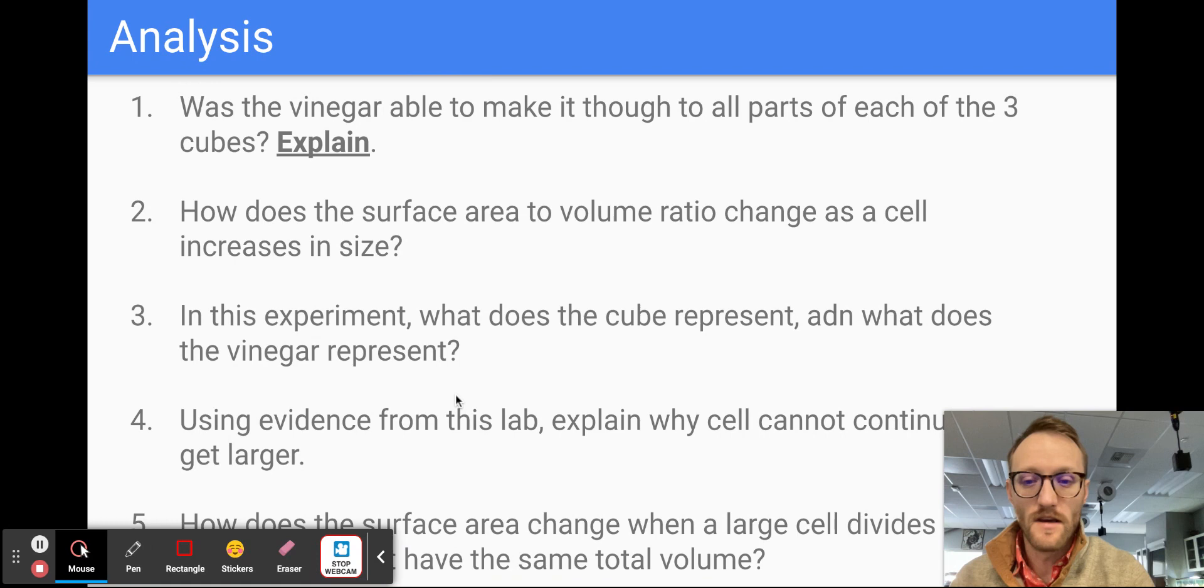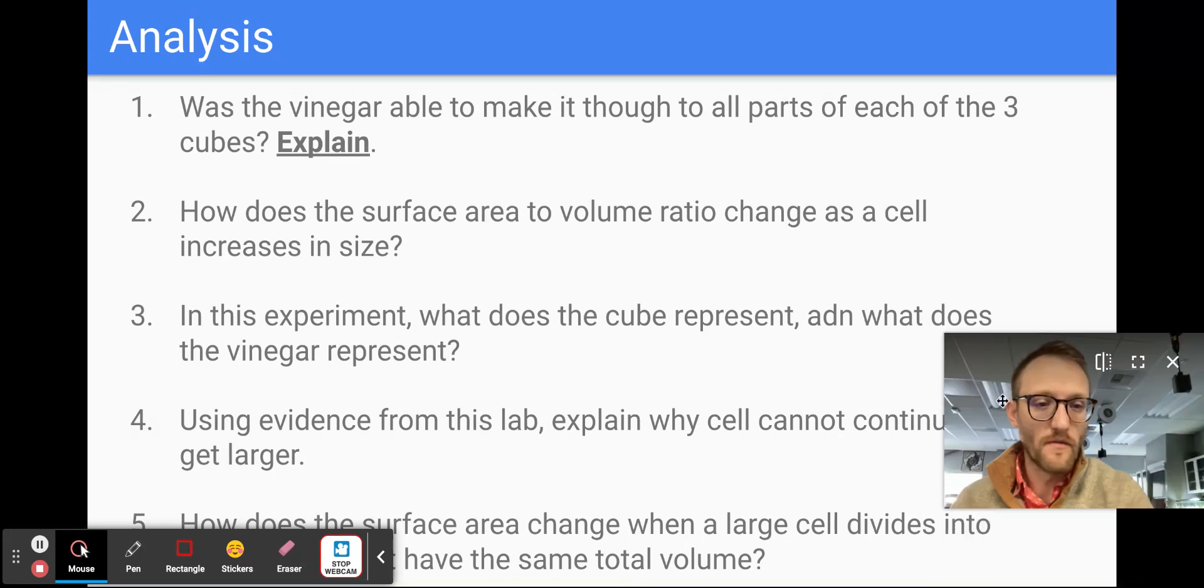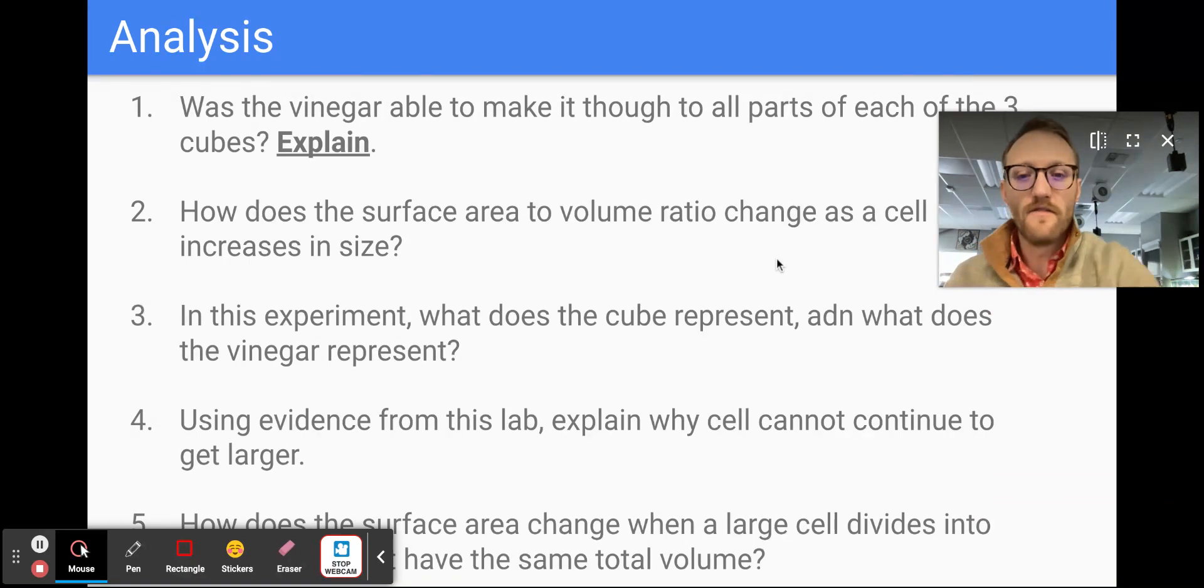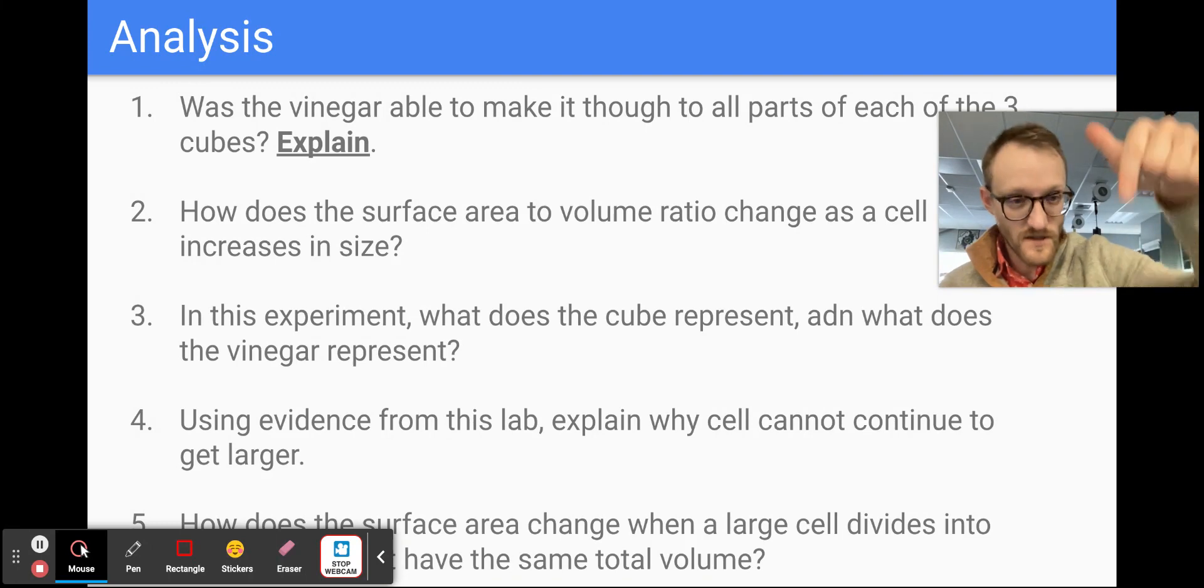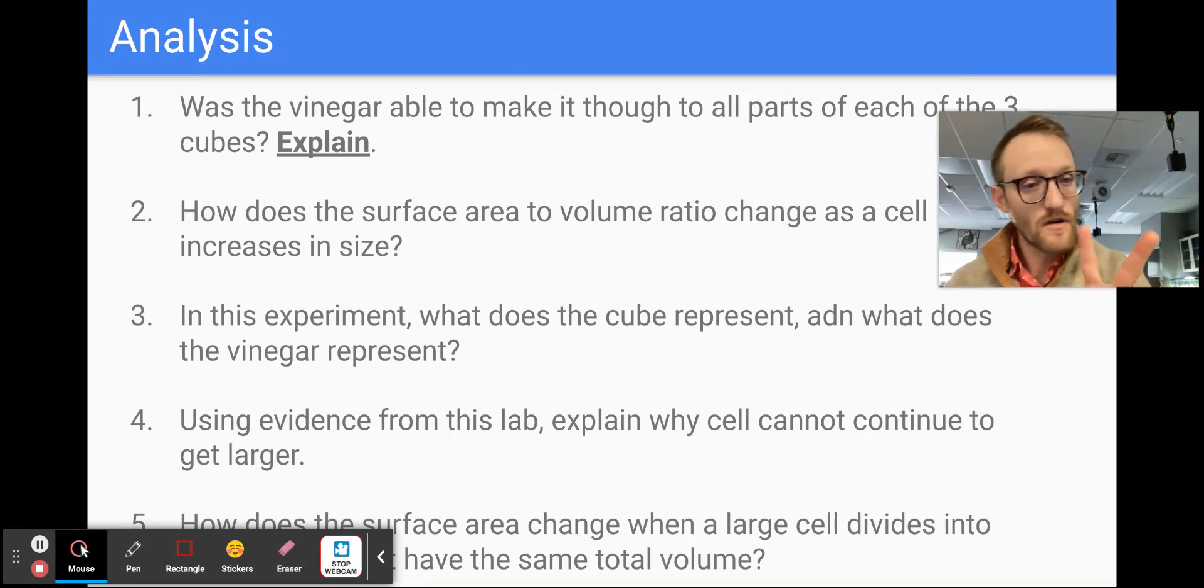So we should be able to answer that one pretty easily. Now question number four says, let me move my guy out of the way here. It says, using evidence from the lab, explain why cells cannot continue to grow larger. Well, we did two things. We calculated the surface area to volume ratio. And we saw as cell size increases, surface area to volume ratio decreases. That's one piece of evidence. That makes it harder for the cell to get the materials that it needs. Our second piece of evidence is we saw that the vinegar was not able to make it through the larger two cells. So those are two pieces of evidence that we want to include there.